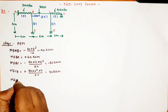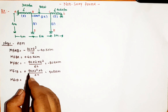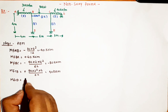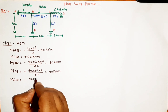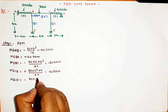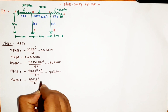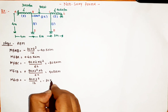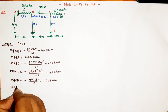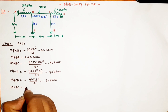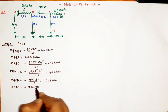Next is M_f_CD, which has a UDL of 40 kN/m. Using wL²/12: M_f_CD = -40×3²/12 = -30 kNm. Therefore M_f_DC = +30 kNm. This completes step one, the calculation of fixed end moments.